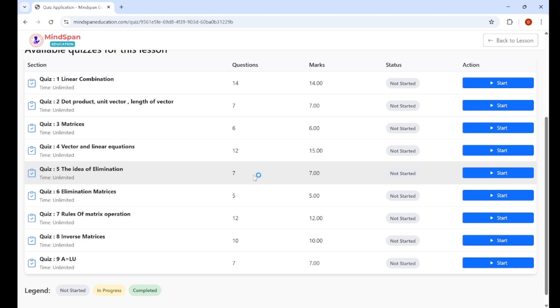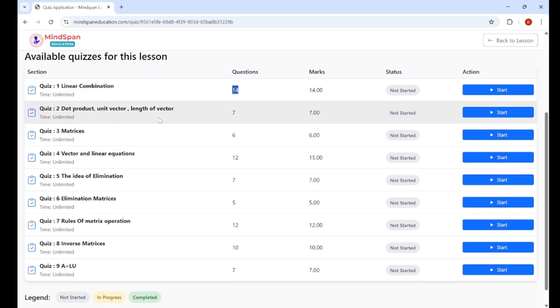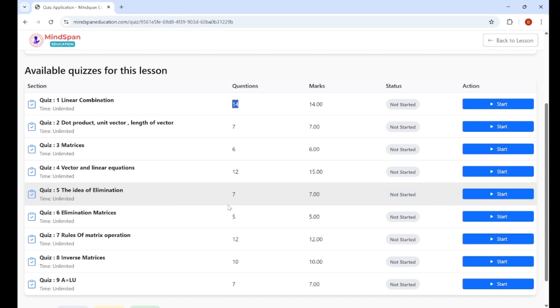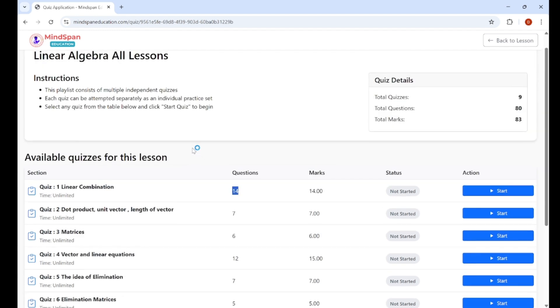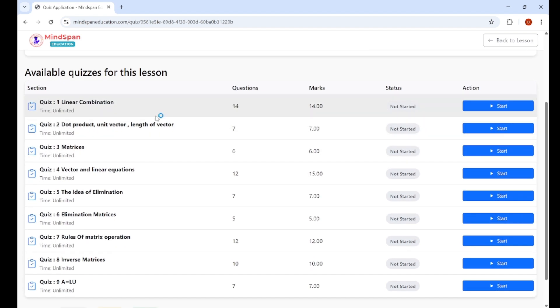See, we have almost uploaded nine new sets. In each set we have multiple questions. It's grouped by chapters. For linear combination we have 14 problems, for dot product unit vector we have 7 problems, for vector and linear equations 12 problems, like that. Similar thing you will see inside calculus and optimization once I start uploading, which I will do after this video.